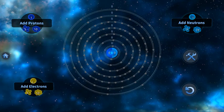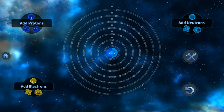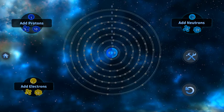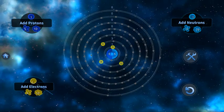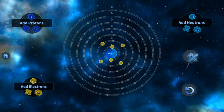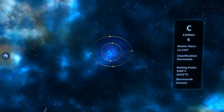And if I remember correctly from the detailed view, carbon had 6 neutrons, 6 protons, and 6 electrons. So let's try that. And... Aha! I created carbon!